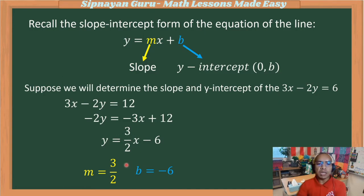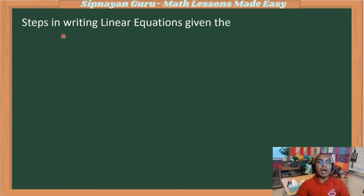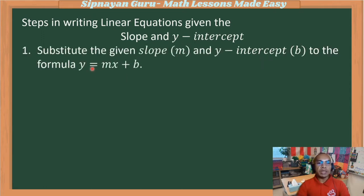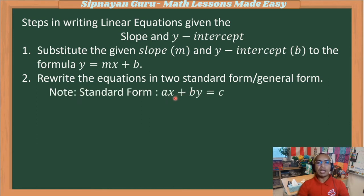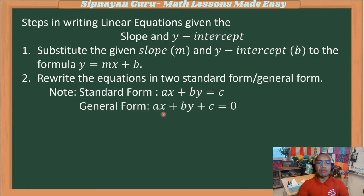Now, what if we reverse the process? We have the slope and the y-intercept, and we find the equation of the line. We substitute the given slope and y-intercept into the formula y equals mx plus b, then rewrite the equation into standard form (Ax plus By equals C) or general form (right side equals 0).